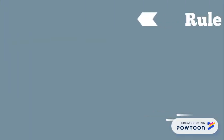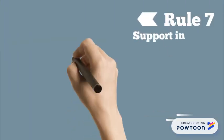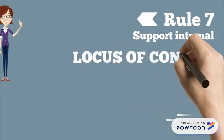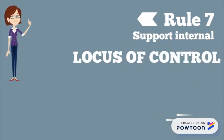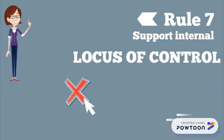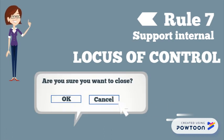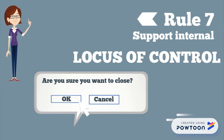Rule number seven: support internal locus of control. This allows users to be the initiators of actions, giving users the sense that they are in full control of events occurring in a digital space.